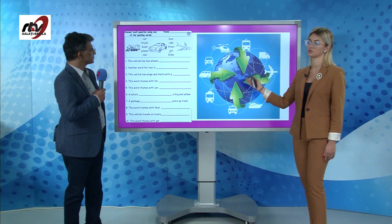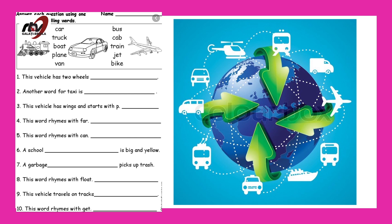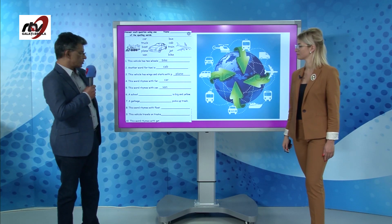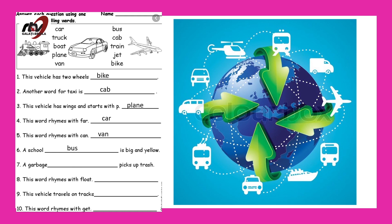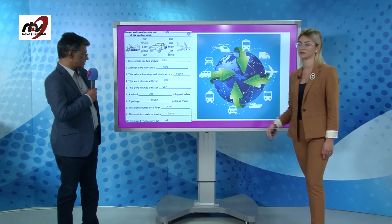For this activity, place the correct words. A vehicle with two wheels is a bike. Another word for taxi is cab — like the famous cabs from New York City. A vehicle with wings starting with P is a plane. This word rhymes with 'far' — it's a car. This word rhymes with 'can' — it's a van. A school bus is big and yellow. A garbage truck picks up the trash. This word rhymes with 'float' — it's a boat. This vehicle travels on tracks — it's a train. And this word rhymes with 'get' — it's a jet.